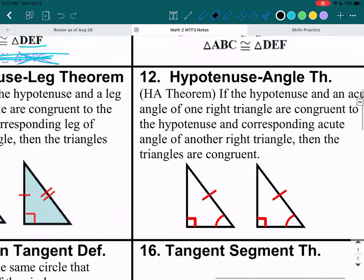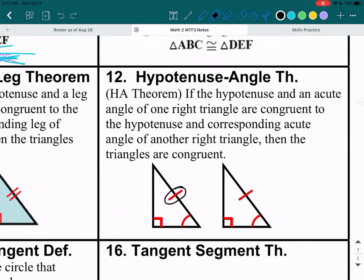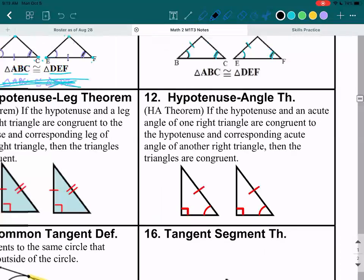Then there's also hypotenuse angle. So if you have the hypotenuse and also an angle being congruent, then the triangles are congruent. Okay, I'm just trying to quickly go over these.